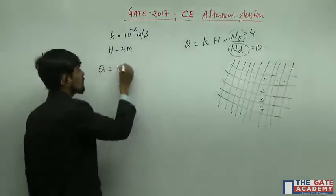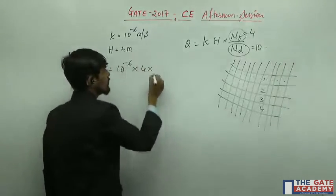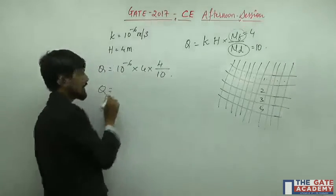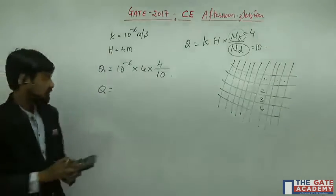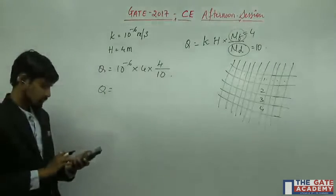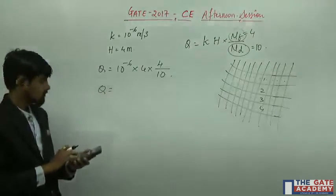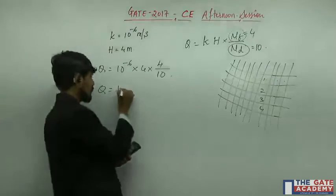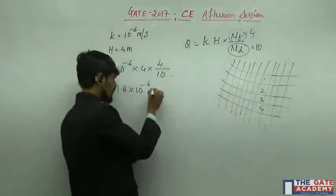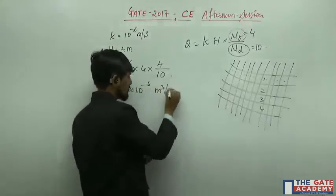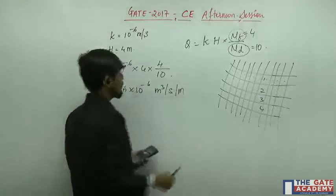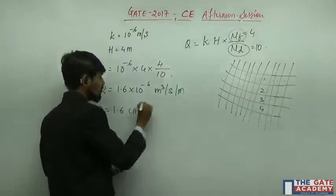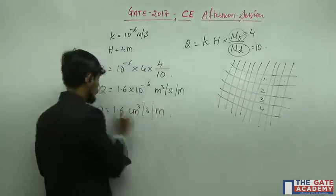So q equals 10 to the power minus 6 into 4 into Nf (which is 4) divided by Nd (which is 10). Solving this gives q equal to 1.6 into 10 to the power minus 6 meter cube per second per meter length. Converting to the required units, q equals 1.6 centimeter cube per second per meter length.